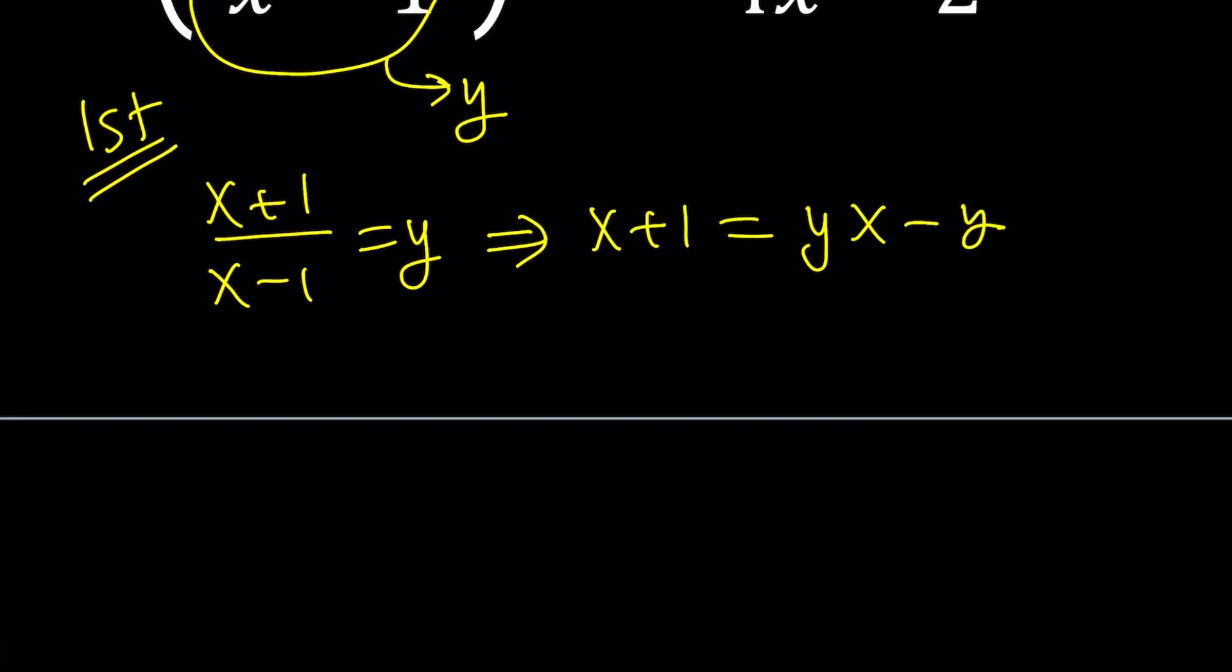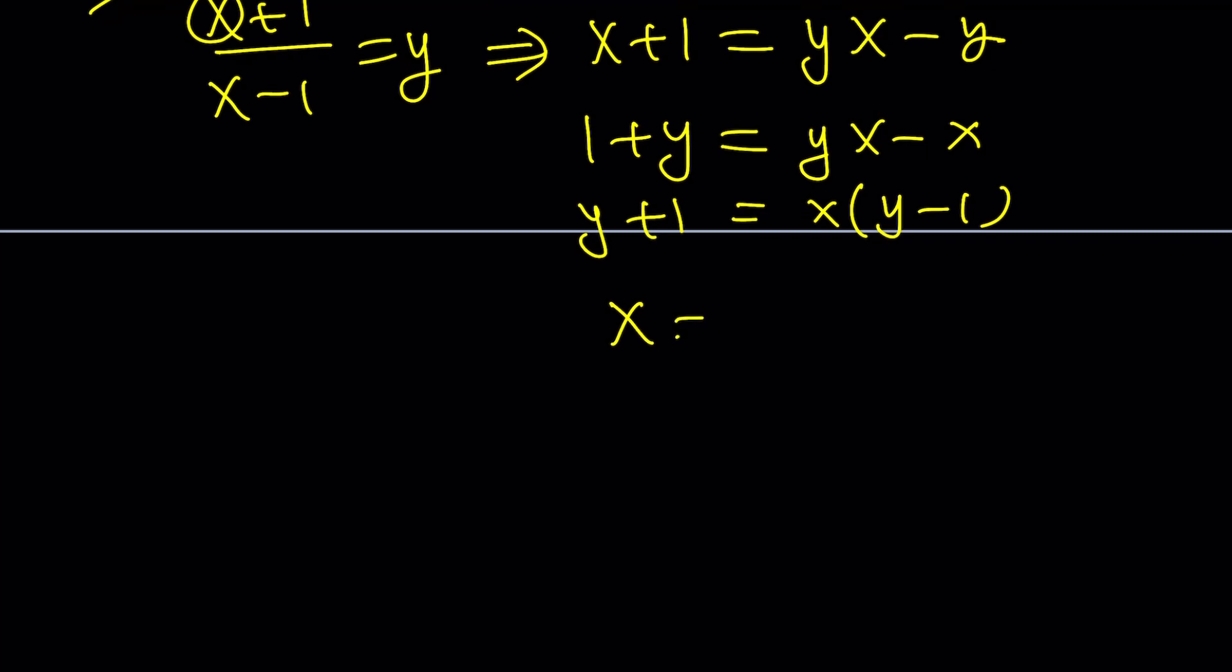And then our goal here is to solve for x, because x is on the left hand side and we want to isolate it. To isolate that we can put these together like 1 plus y here, and yx minus x here. And then factor out x. You're going to get y minus 1. And divide both sides by y minus 1. Then you'll get x equals (y+1)/(y-1).